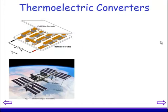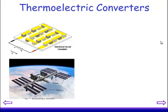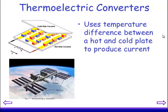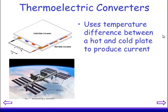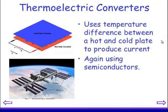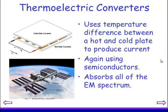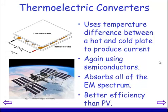Another type of option is known as the thermoelectric converter. What happens here is it uses a temperature difference between a hot and cold plate to produce current. It does still use semiconductors, but this time it's the temperature difference that matters — produced by sunlight falling on one side and not on the other. The good thing about this is it absorbs all of the EM spectrum, so there's less wasted energy, giving it better efficiency than the photovoltaic cells.